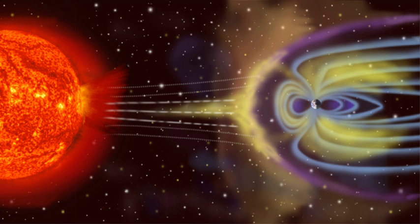A magnetosphere is a region of space surrounding an astronomical object in which charged particles are manipulated or affected by that object's magnetic field.